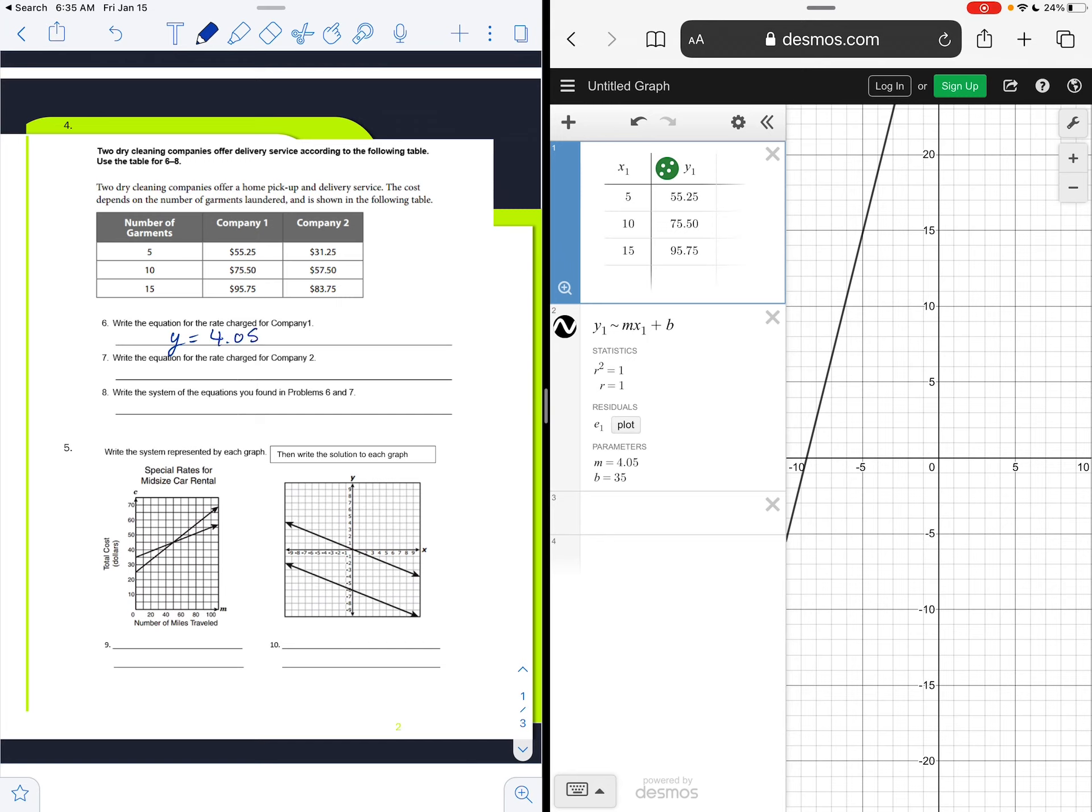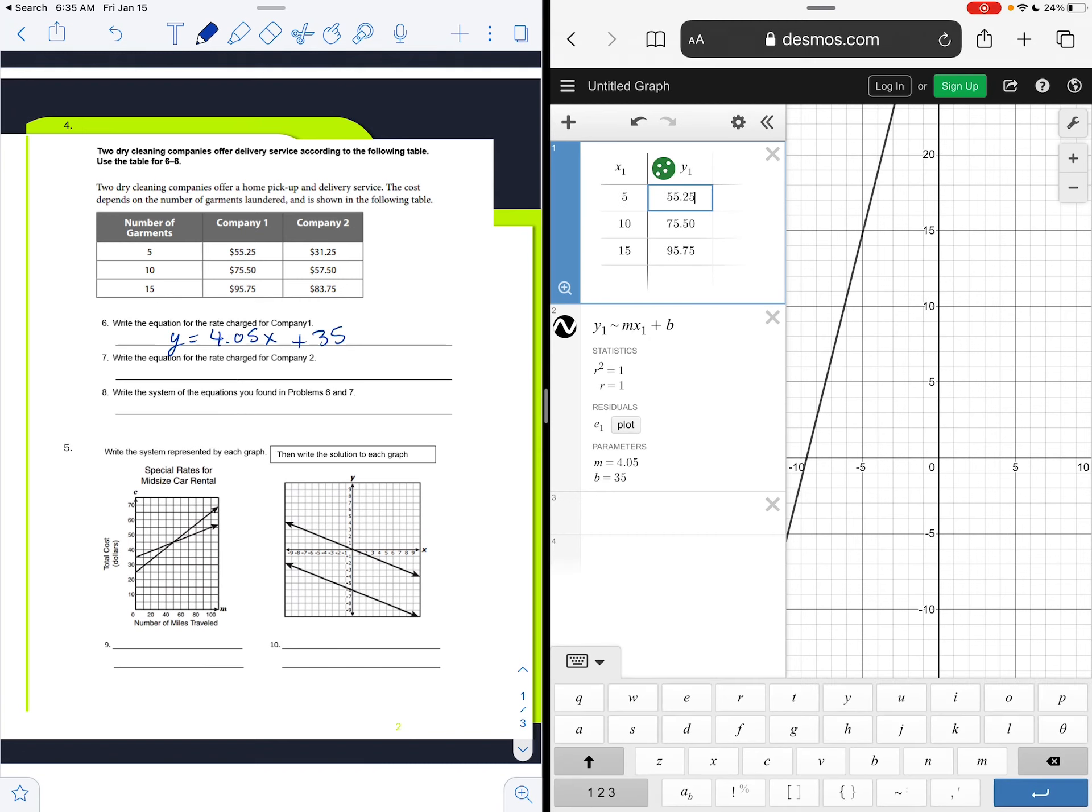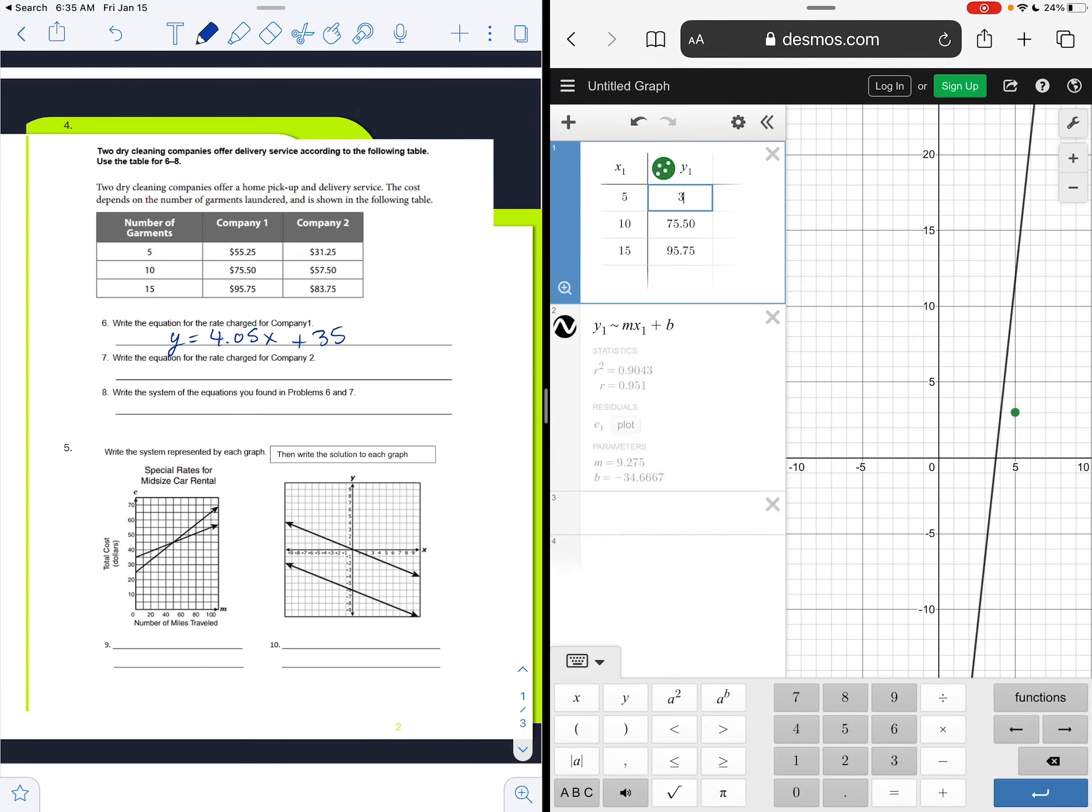Alright, that's the first equation given company one. And now we're going to do the same thing, create an equation, but we're going to do it for company two. So we're just going to come in here and change out our values. So this will now be 31.25 because we're dealing with company two.